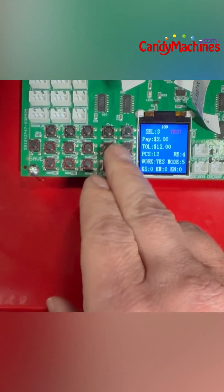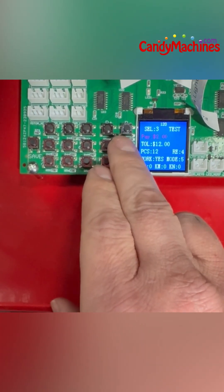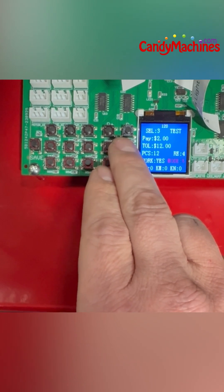So once you get into the capsule page, you have a down button that allows you to go to each of the selections.